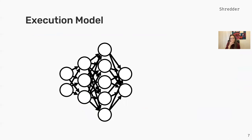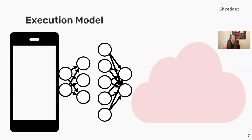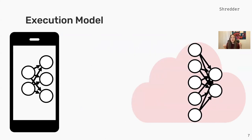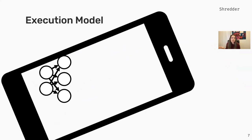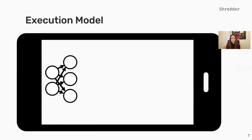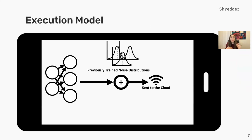The execution model we're assuming is a kind of split learning setup. We cut the neural network into two sections: the first section is deployed on the edge device and the second one on the cloud. Once we've run the first partition, we add some noise sampled from these noise distributions that we know the model is resilient to. We then send these noisy intermediate activations to the cloud to run the rest of the inference task.